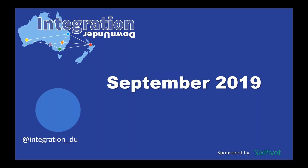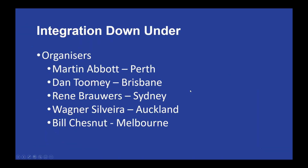Hello and welcome to the September meeting of Integration Down Under. We'll go through a few slides before we get started. Dan has got an offer around the API Days in Melbourne later on that we'll talk about, and we'll put an email address up there for you to contact. The organizers for Integration Down Under are Martin, Dan, Renee, Wagner, and myself.